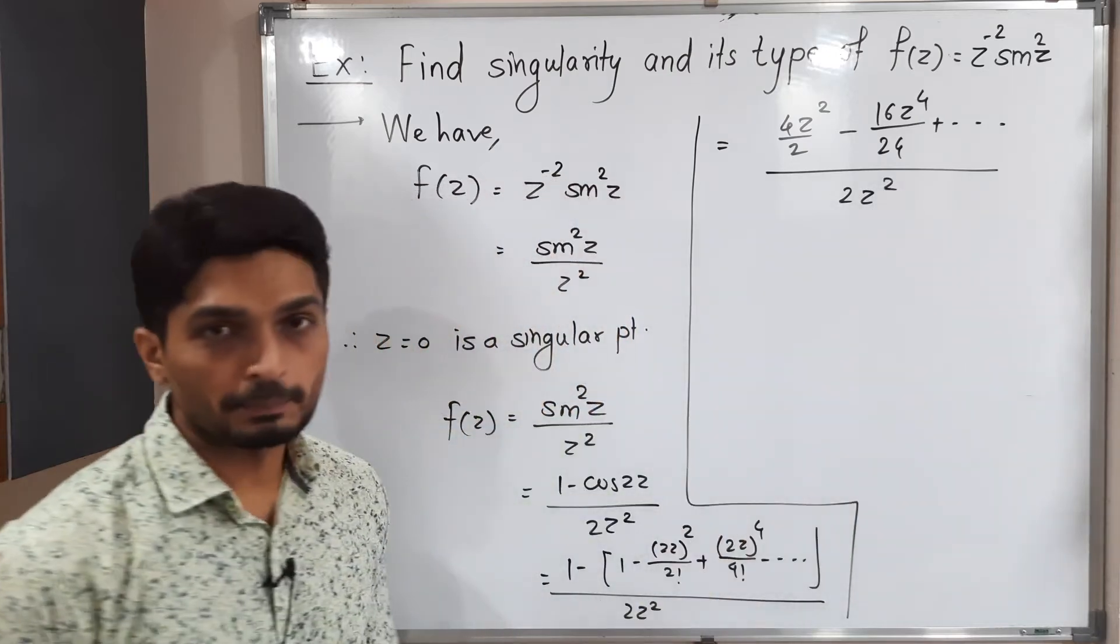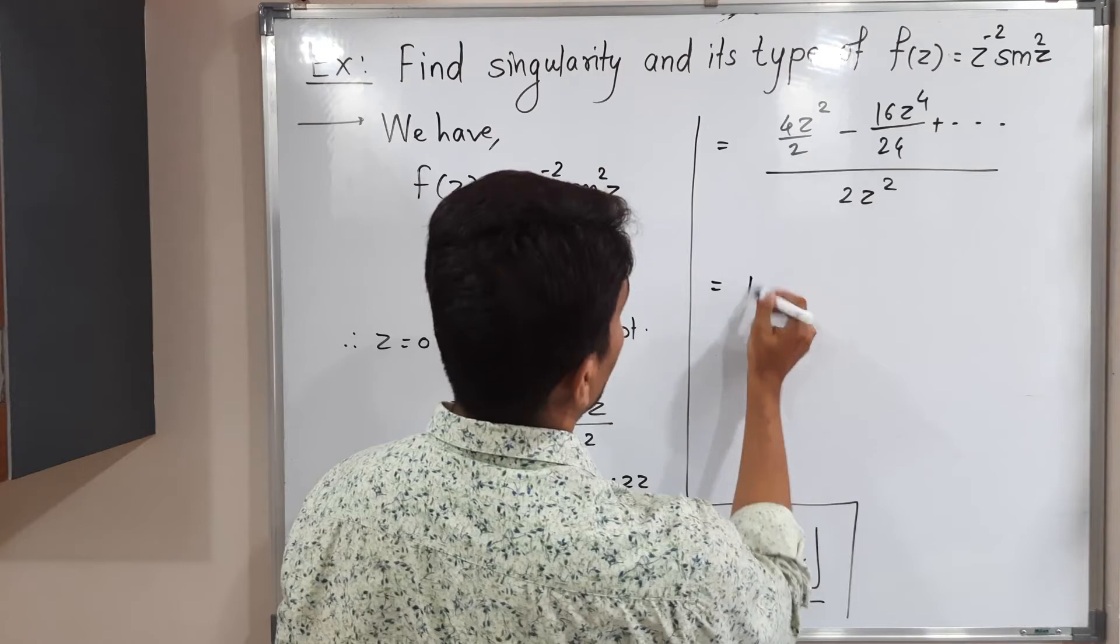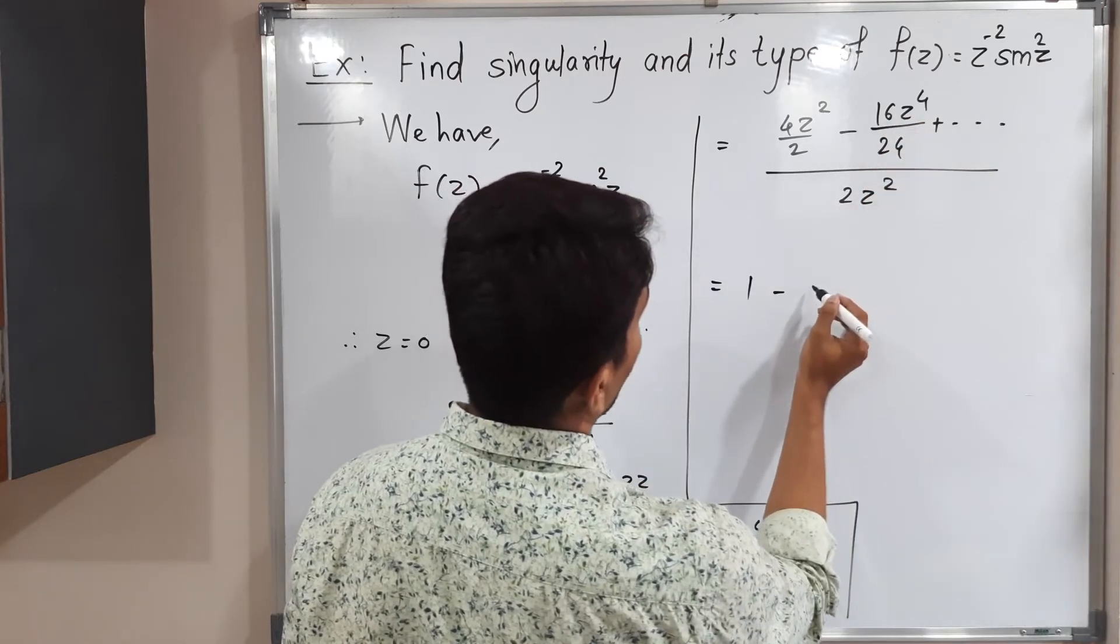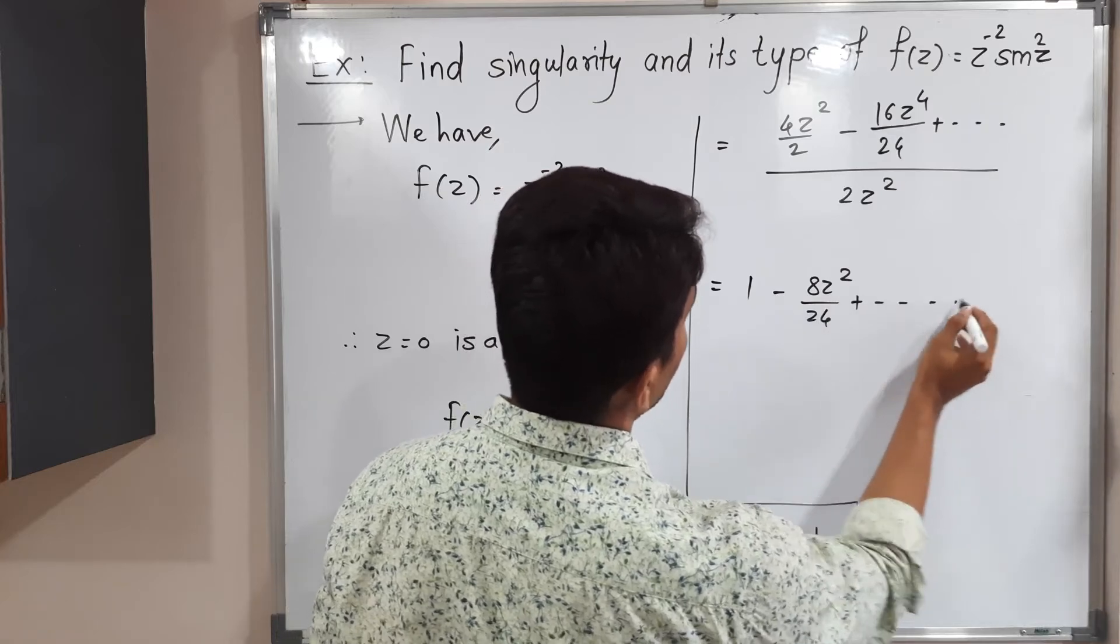Let us see what will happen. z² z² cancel, 4/4 cancel, 1 minus 2 to cancel, and 8z²/24 plus and so on.